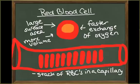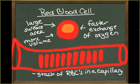This shape also allows red blood cells to form stacks, like dinner plates stacked up. These rows of red blood cells can then efficiently fit through the narrow lumen of the smallest blood vessels called capillaries. Red blood cells are able to change shape as they are squeezed through the capillaries because they are very flexible.